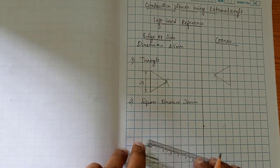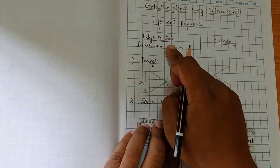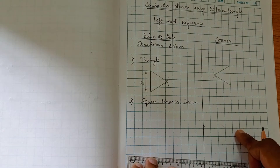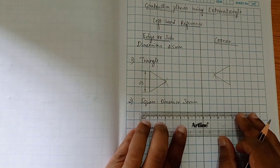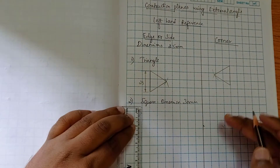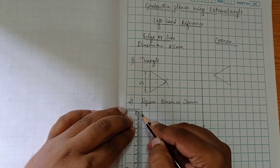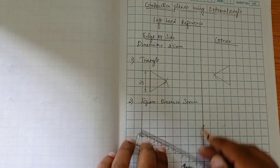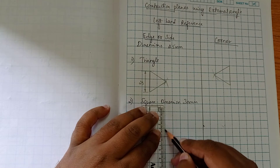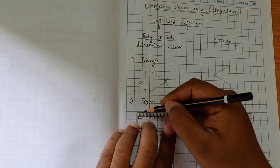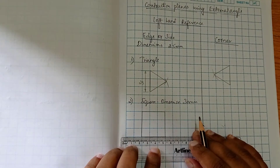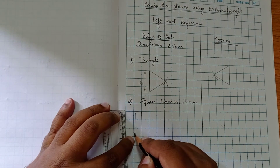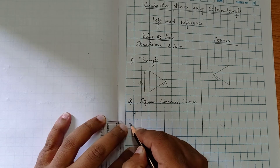Now similarly we can construct the square with respect to edge. Here the edge position determines all positions with respect to the edge. The square of dimension 30 with respect to edge — here it is three boxes. Dimension we can show on one side. It is 30.